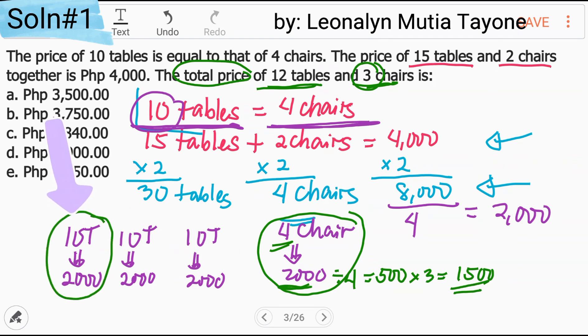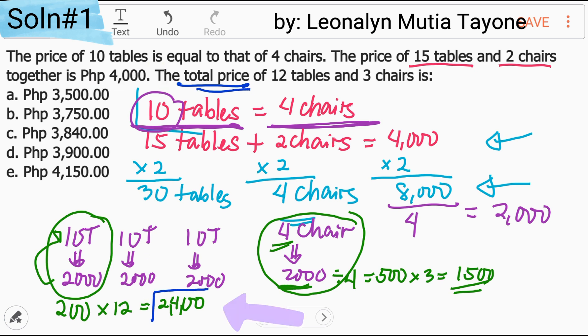Dito naman, itong 10 tables na to, ang equivalent niyan or value niyan ay 2,000. I-divide naman natin to. 2,000 divided by 10 equals 200. Therefore, each table, ang value niya ay 200. 12 tables yan. I-multiply natin ito ng 12. This is 2,400. Ang tanong dito ay yung total price. Ang total price ay i-add lang natin itong 2,400 at itong 1,500. 2,400 sa tables at sa mga chairs 1,500. Ang total dito ay 3,900. Yan na yung sagot. 3,900.